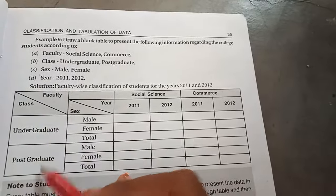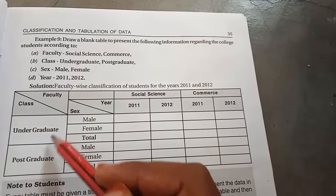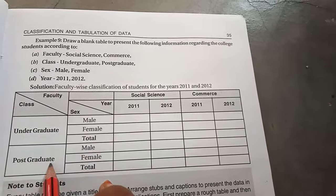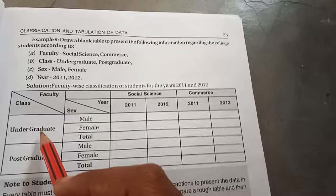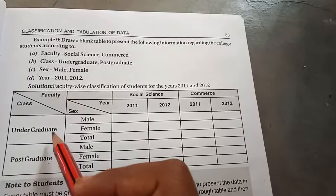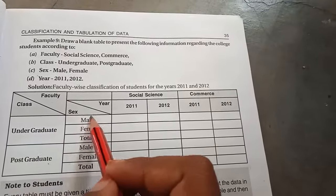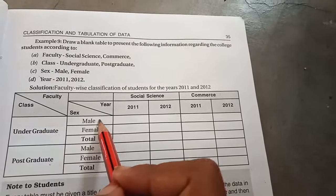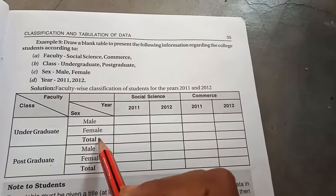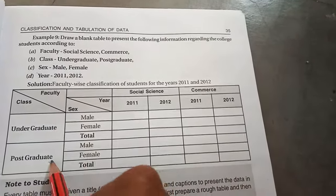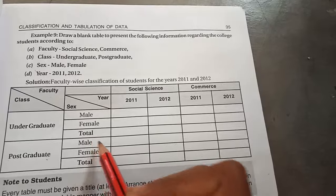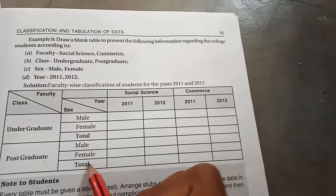Classes in column representation: undergraduate and postgraduate. Under undergraduate — sex: male, female, total. Under postgraduate — male, female, total.